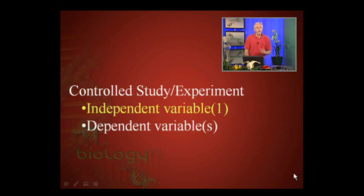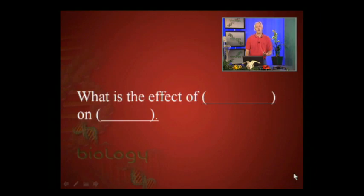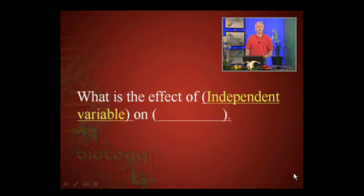The first element is we would want an independent variable, and ideally there is a single independent variable in a well-designed experiment. The independent variable is the thing that you're testing or going to manipulate to see what the effects are. The dependent variable or variables will be those things affected by your independent variable. Normally you can phrase an experiment as: 'What is the effect of blank on blank?' — the first blank is the independent variable, and the second blank is the dependent variable.